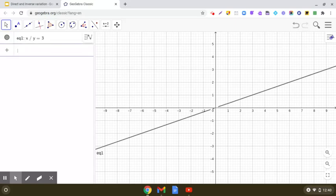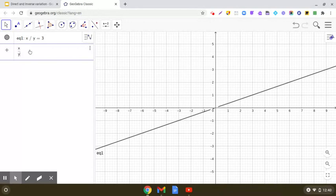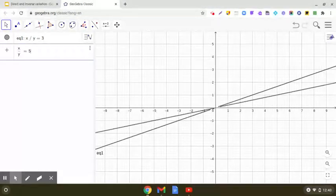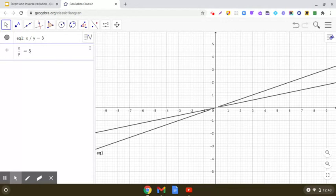See the type of graph. Let us take another one: x upon y equals 5. Now, what do you observe? We observe that these are straight lines and both lines are passing through the origin.